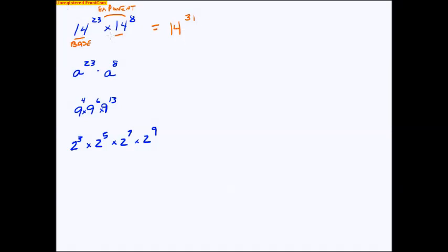So that's as easy as it is right there. Same base has to happen. And when you multiply things of the same bases, or numbers of the same bases, you just add the exponents. So 23 and 8 gives me a 31.